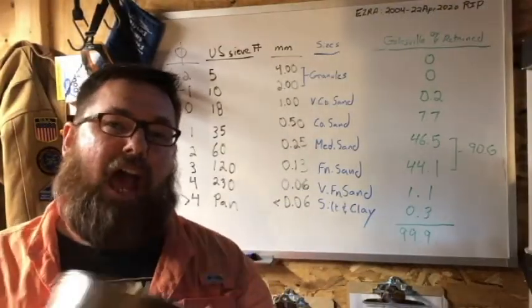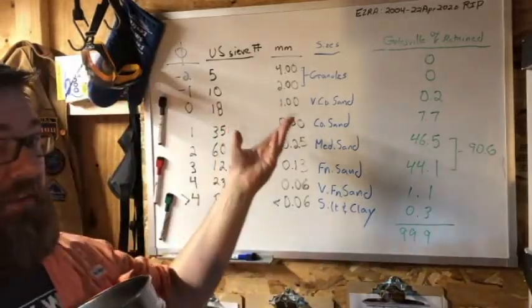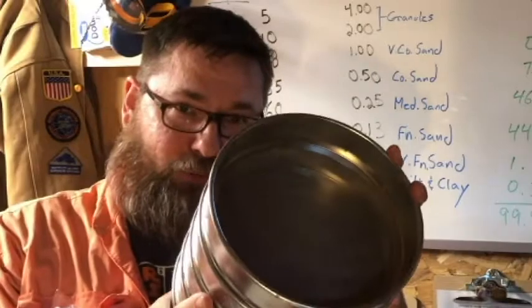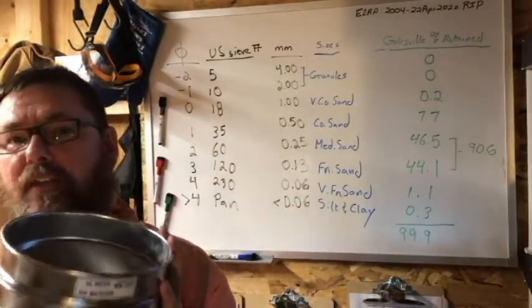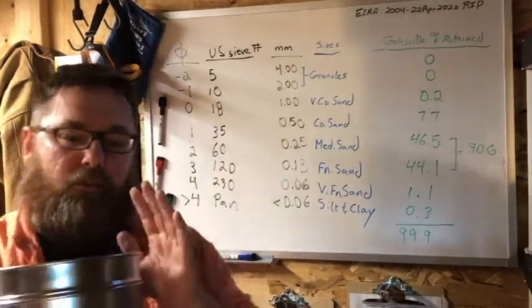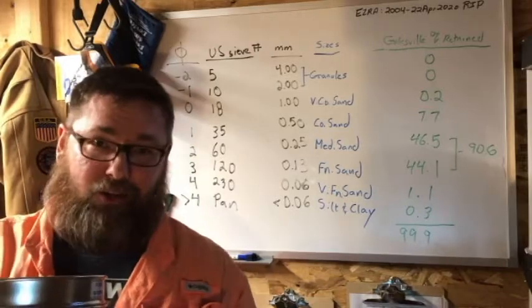A grain size analysis is a mechanical way of determining what you're seeing here. I have more sieves than this—these are just the ones that are out. The problem with doing a mechanical grain size: if it's real hard rock, this isn't going to work.